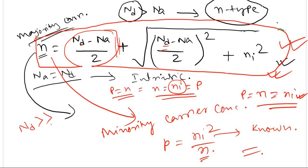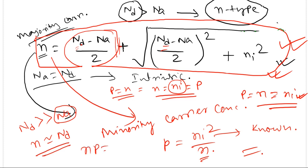If Nd is very high compared to Na, the contribution of Na is negligible. In that case, n equals Nd directly. You can then calculate the minority carrier p using the mass action law: p = ni^2 / n. However, this approximation is not applicable when Nd is not much higher than Na — then you need to use the exact quadratic formula.